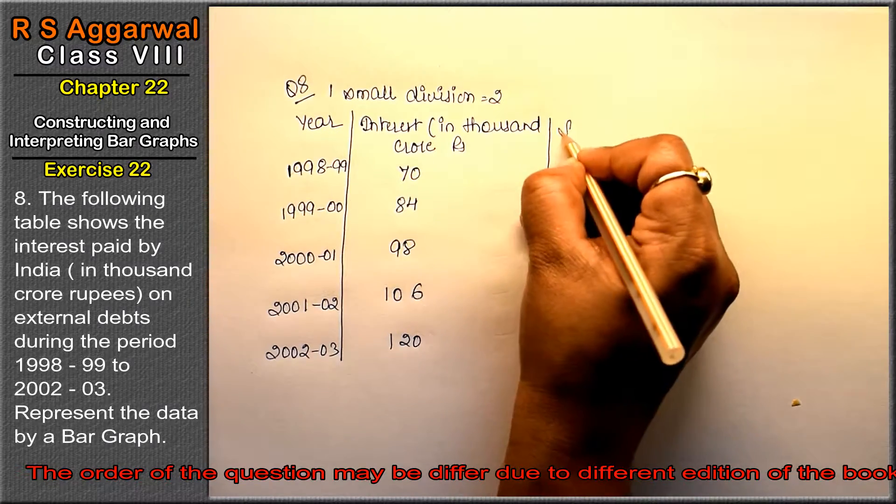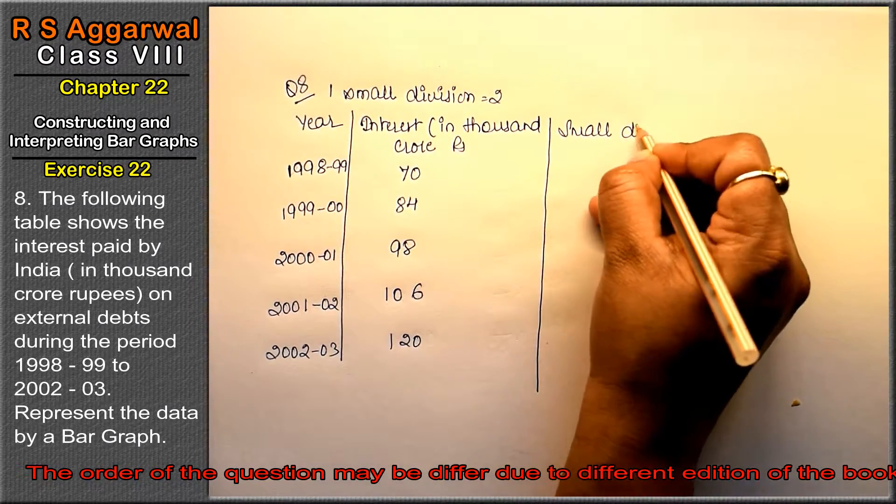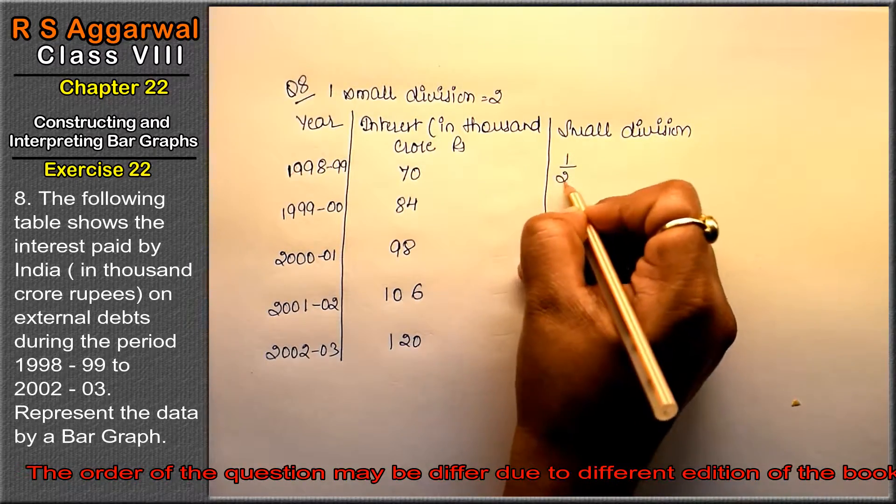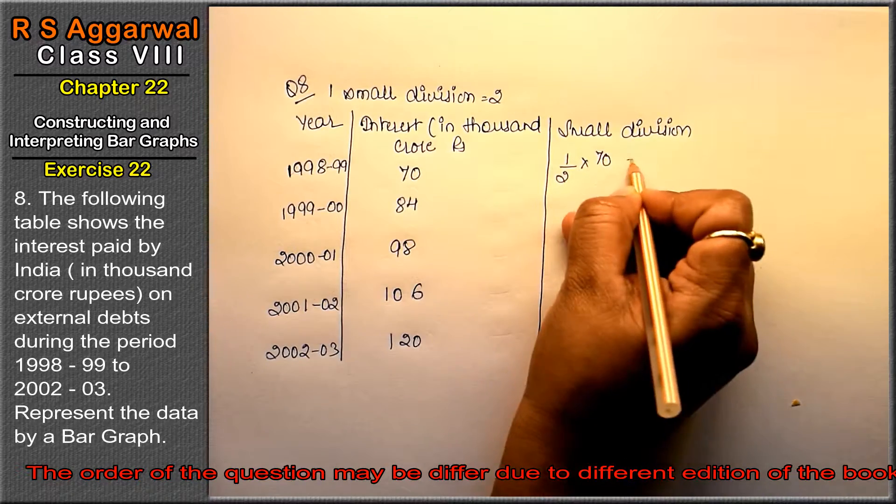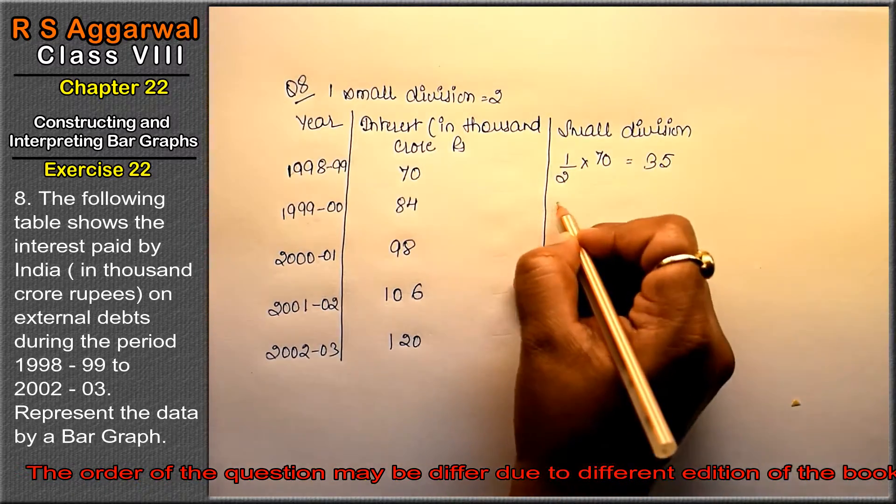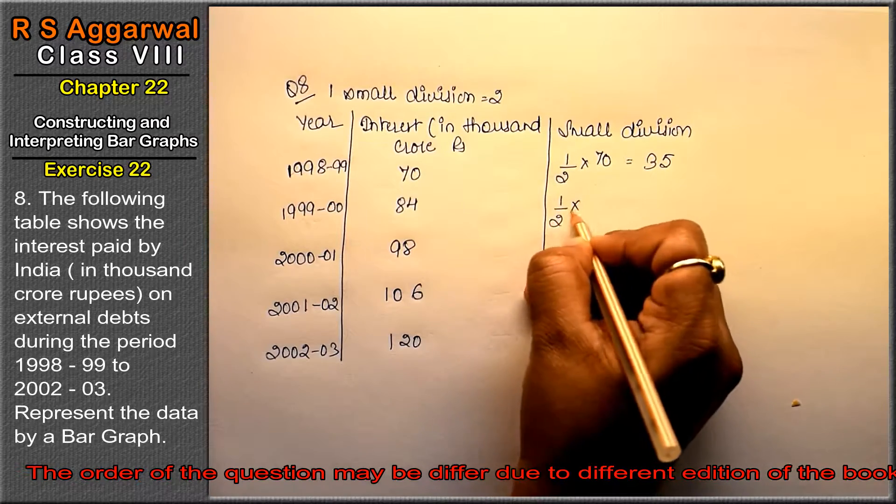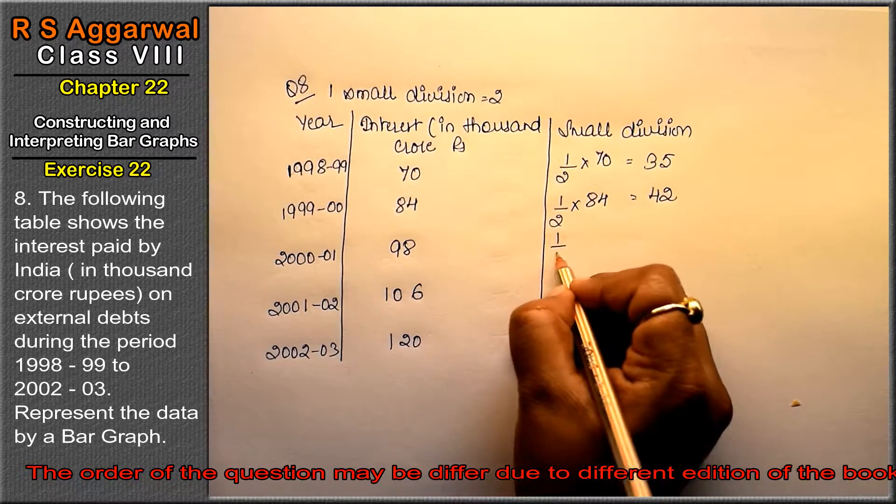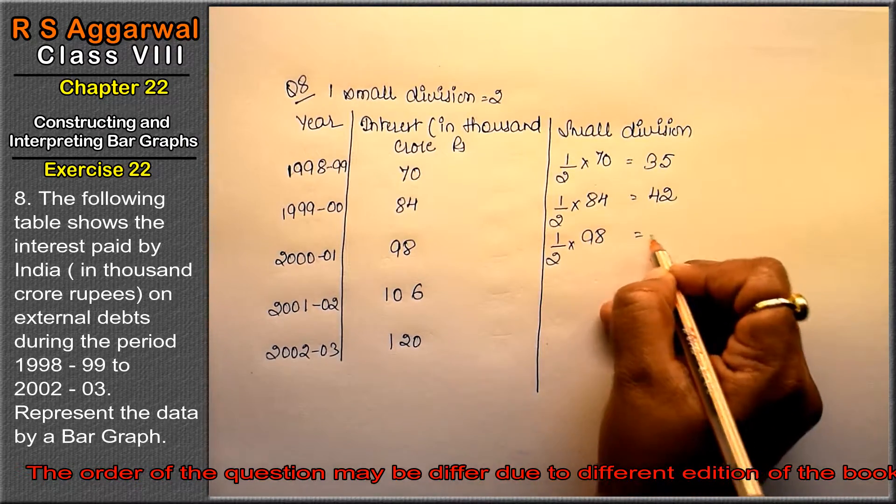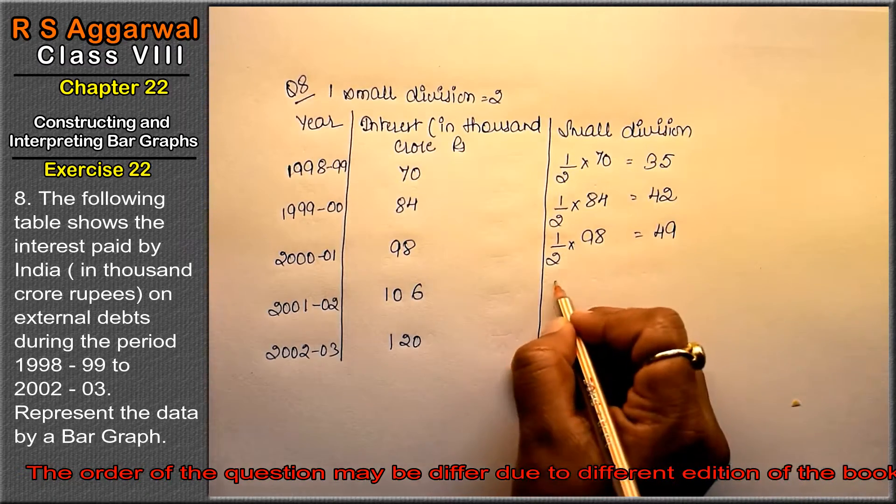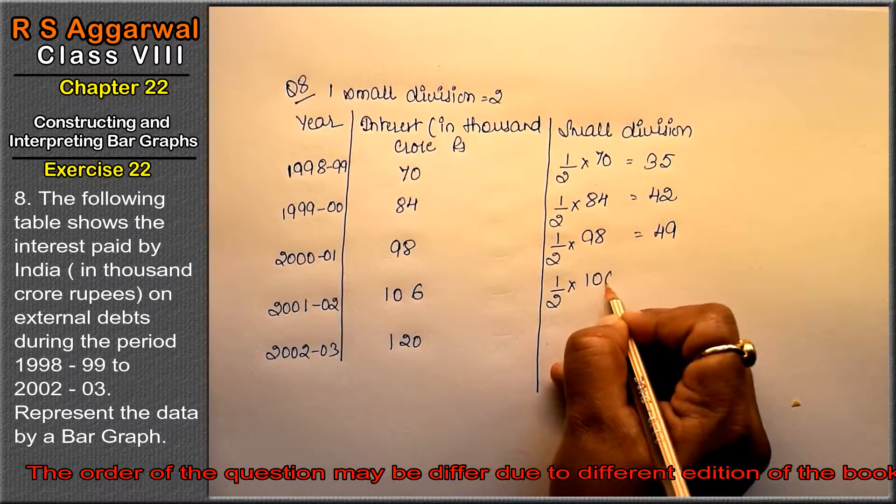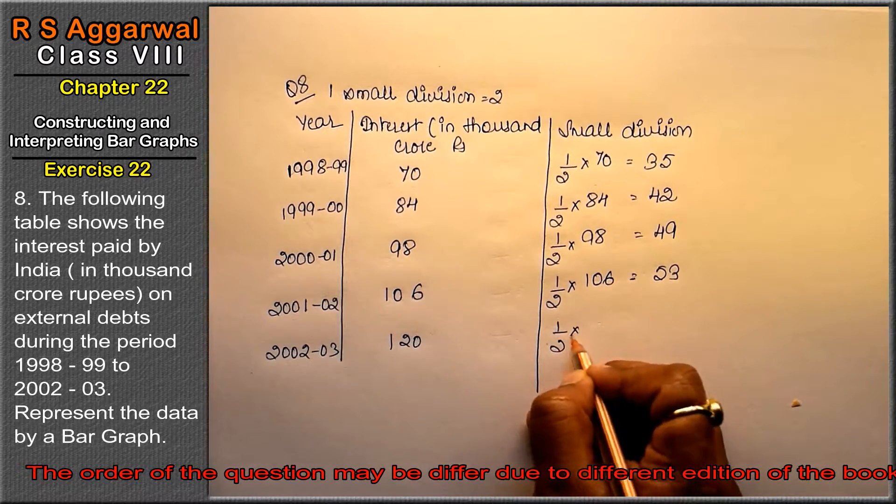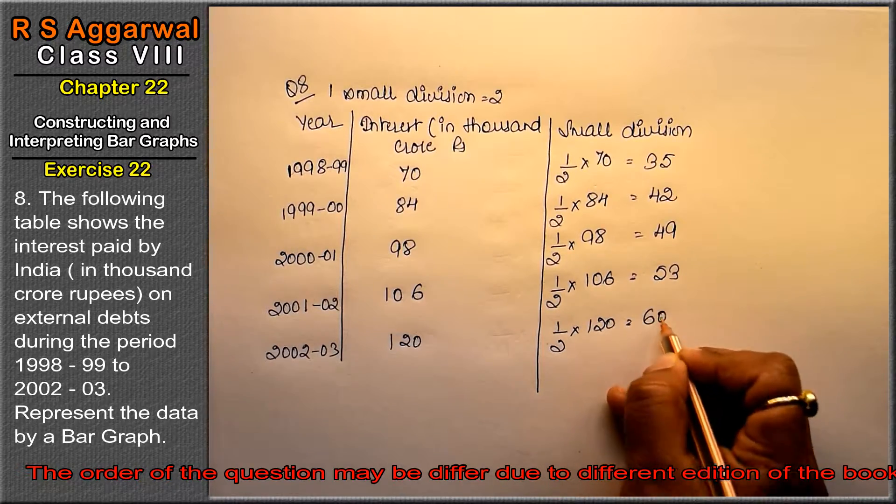We have small divisions, so this is 1/2 times 70, which gives us 35 small divisions. 1/2 times 84 is 42. 1/2 times 98 is 49. 1/2 times 106 equals 53. And 1/2 times 120, that is 60 small divisions.